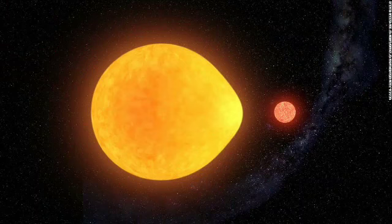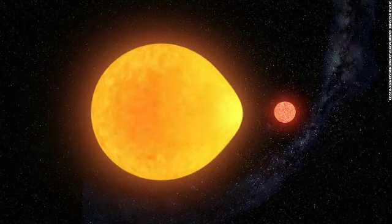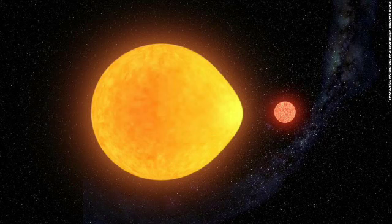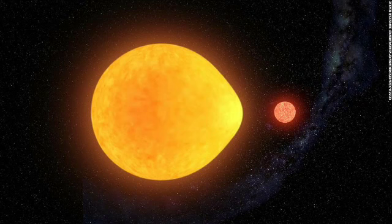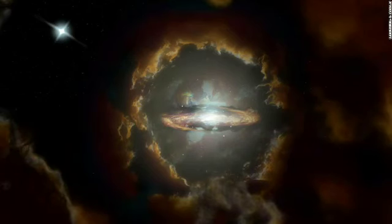This is a large star known as HD 74423 and its much smaller red dwarf companion in a binary star system. The large star appears to pulsate on one side only, and it's being distorted by the gravitational pull of its companion star into a teardrop shape.